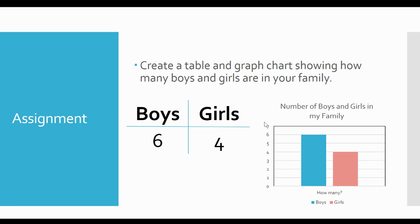You can draw a line going horizontally and a line going vertically. You can write boys on top of the column, and you can write how many under each for boys and girls.